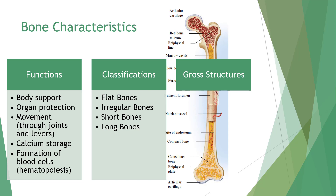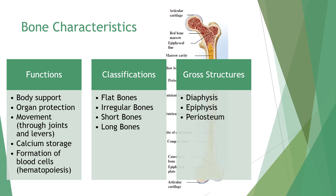The gross structure of long bone includes the diaphysis — the shaft, which is hollow and cylindrical, covered by compact bone, with a medullary cavity containing yellow marrow lined by the endosteum. The epiphysis is composed of cancellous bone with hyaline cartilage covering and provides areas for muscle attachments. The periosteum is a dense, white, fibrous covering that penetrates the bone via Sharpey's fibers.